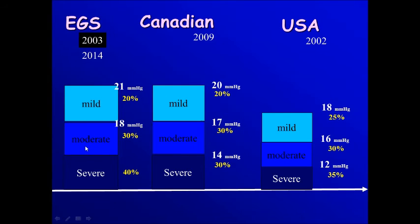In case of moderate glaucoma, the limits are 18, 17, 16, or 30 percent reduction.